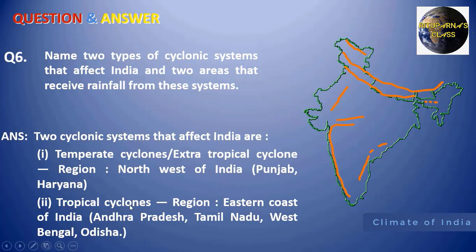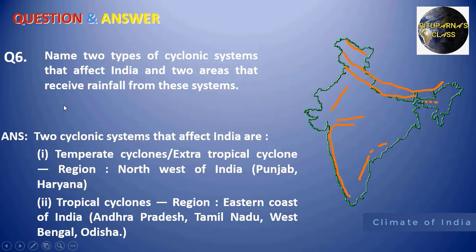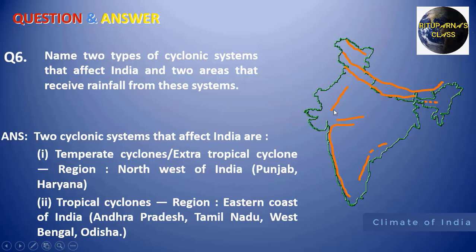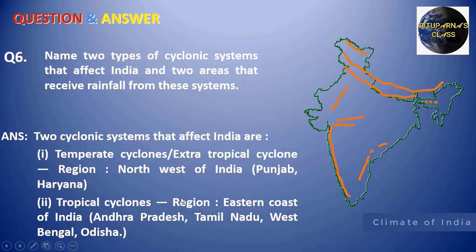Because of the tropical cyclone, the eastern coastal plain of India — Andhra Pradesh, Tamil Nadu, West Bengal, and Odisha — receive rainfall. The temperate cyclone, also known as the extra-tropical cyclone, brings rainfall to the northwestern portion of India. The source of moisture for this rainfall is the Mediterranean region.